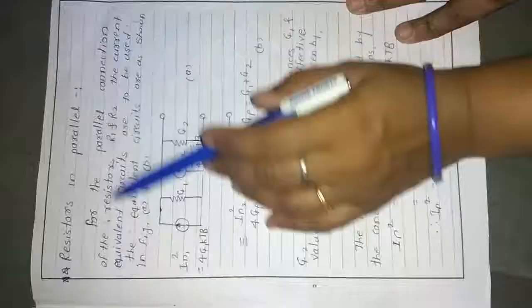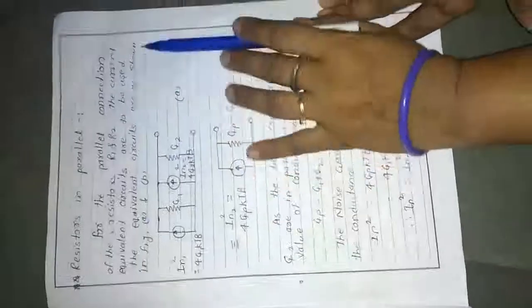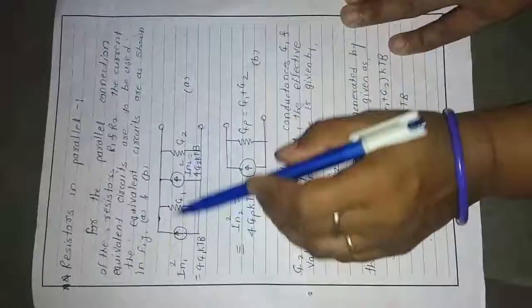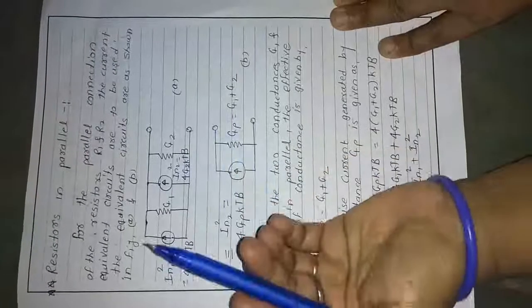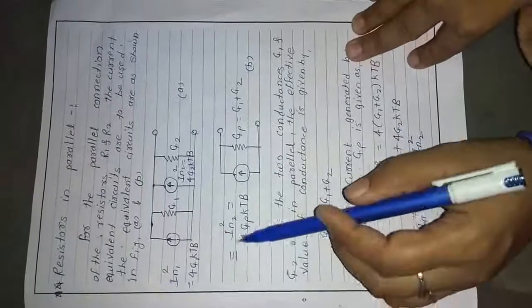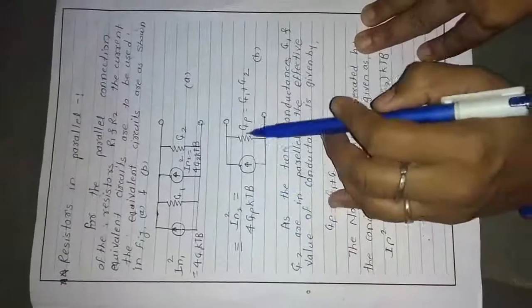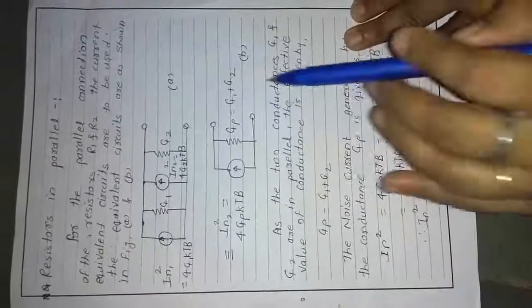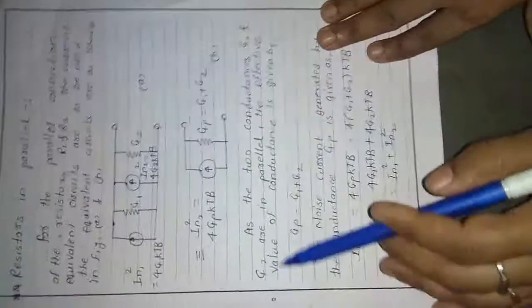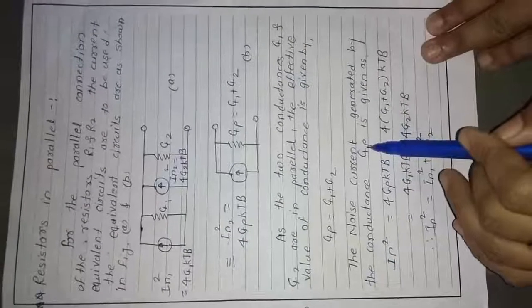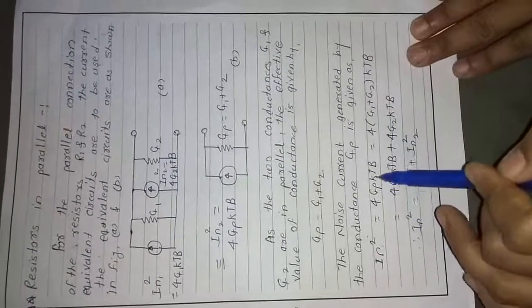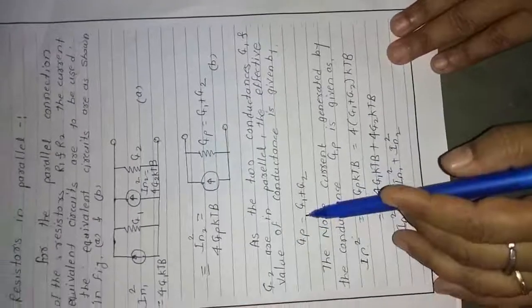Now for resistors connected in parallel. For the parallel connection of resistors R1 and R2, the current equivalent circuit is used, where G1 and G2 are the equivalent conductances. For resistors in parallel, we calculate using current. The noise current squared equals 4·Gp·K·T·B, where Gp is the parallel conductance Gp = G1 + G2.